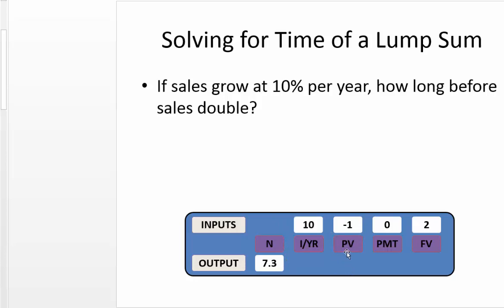We assume we have sales of X amount, and the future value will be double that. As a convention, I enter negative one as present day sales and two as our future value. We have no payments, and the rate of growth is like the interest rate. We assume that sales are growing at 10% every year.